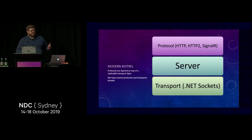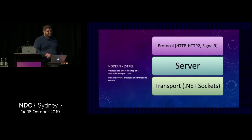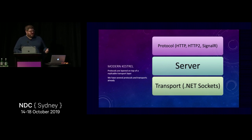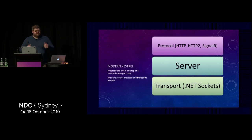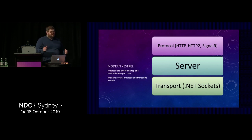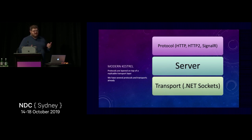We have three protocols supported in the box: HTTP, HTTP/2, and SignalR. We had to extract a genuine layer there because we needed to replace HTTP with something else. So now we've got this layer cake: on the bottom is the transport layer with connections and raw IO; on the top is the protocol layer providing structure and meaning to raw bytes; and in the middle is the server — the traffic cop mediating between those two layers and managing the contracts between them.